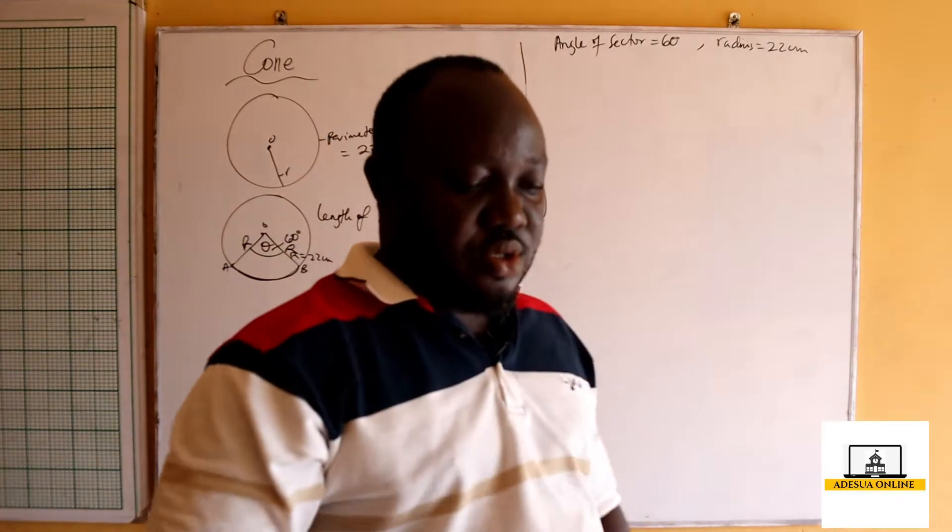We are told that the angle of a sector of radius 22 centimeters is 60 degrees. So we have the angle of the sector equal to 60 degrees, and the radius of that sector is equal to 22 centimeters.